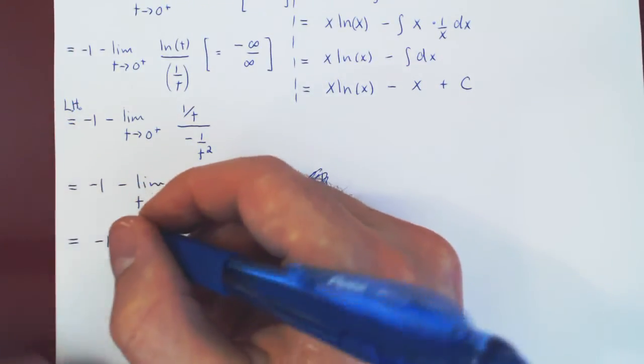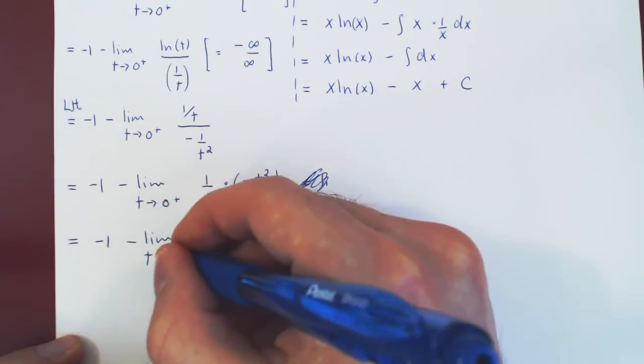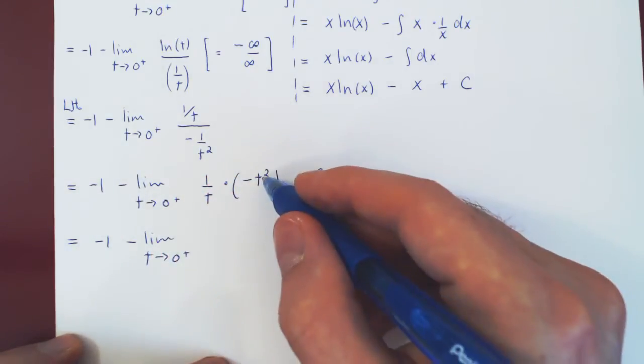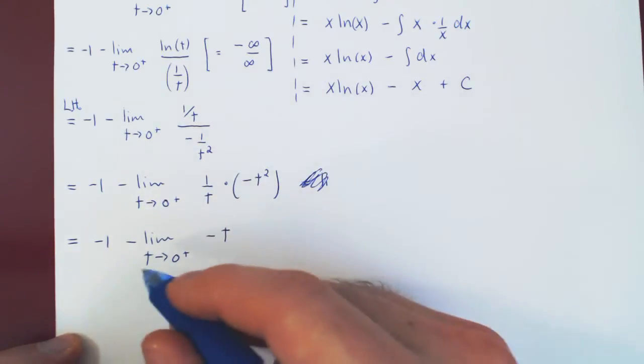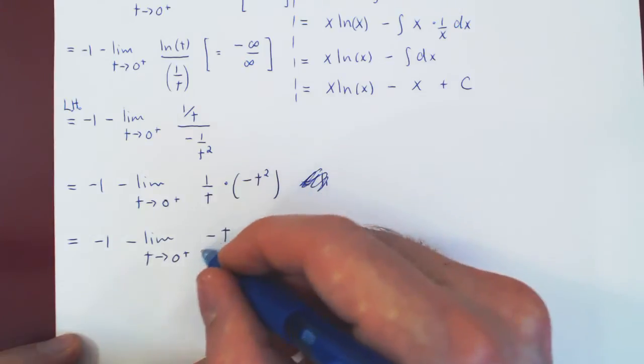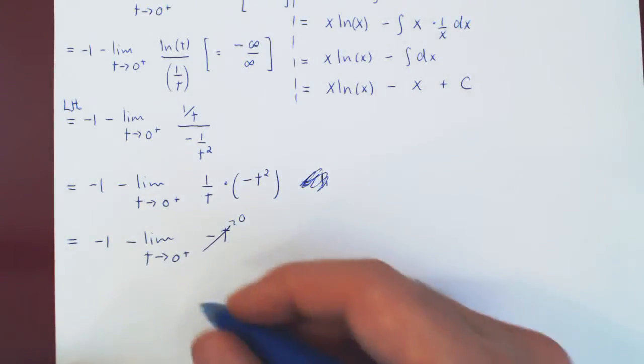So, we have negative 1, negative the limit, as t goes to 0. Negative t squared over t is negative t, and now we have a trivial limit. As t approaches 0, so does negative t. And our final answer is, quite simply, negative 1.